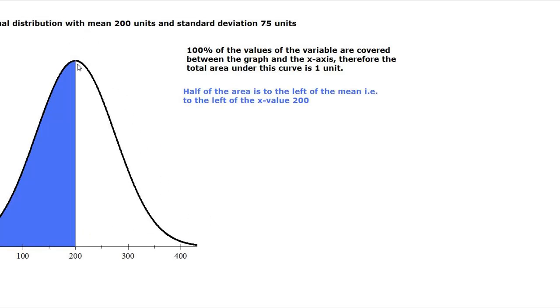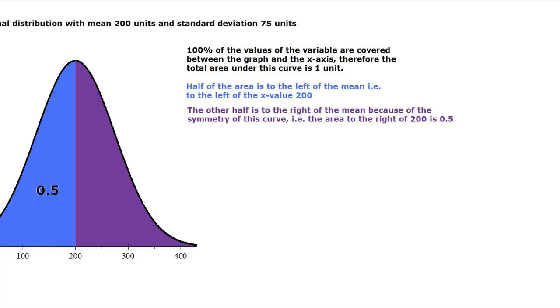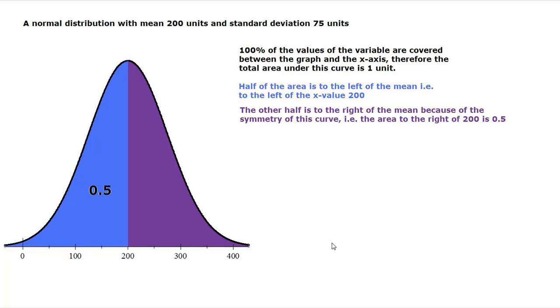Now, the total area under the curve is 1 unit and the mean is right here at the center. So because of the symmetry of the graph, the area to the left of 200 would be 0.5, or 50% of the area is to the left of 200. In the same manner, 50% area or the other half is going to be to the right of 200.